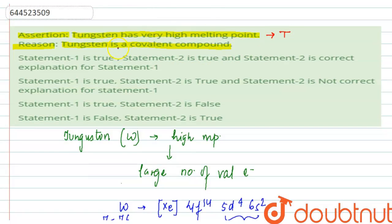But tungsten, being a metal, forms ionic compounds. Tungsten does not form covalent compounds. So this statement is false, and the reason is false. The reason is not the correct explanation for the assertion.